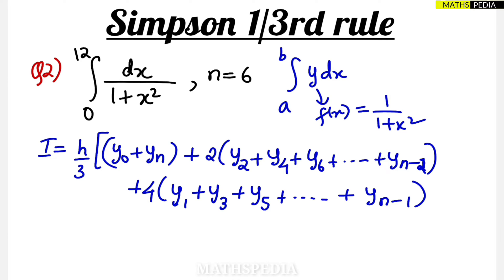Now here we have to find the value of h. h is nothing but b minus a by n. h is nothing but the width of the interval. So b is nothing but 12 upper limit minus lower limit divided by the interval is given in the question 6. So answer is 2.